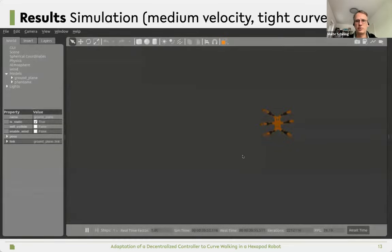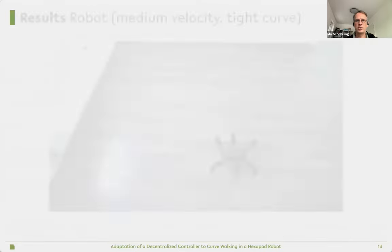Last, I want to show you some videos. First one in simulation. You see it's a six-leg robot, it's not that fast, but it's quite good in doing this tight curve. This is medium velocity. These gating patterns are just emerging from the interactions of the legs.